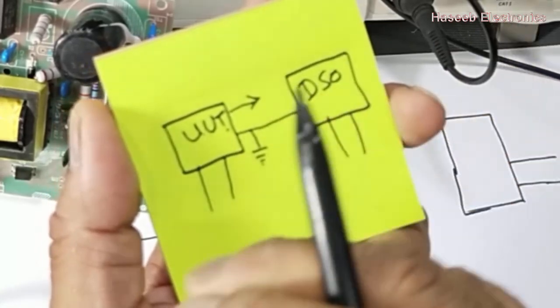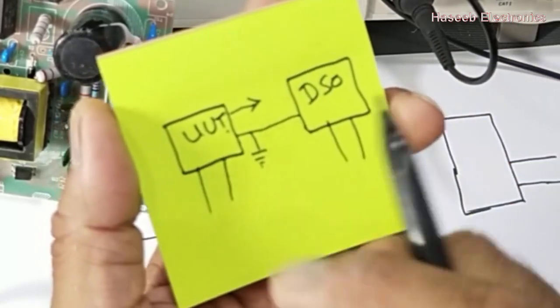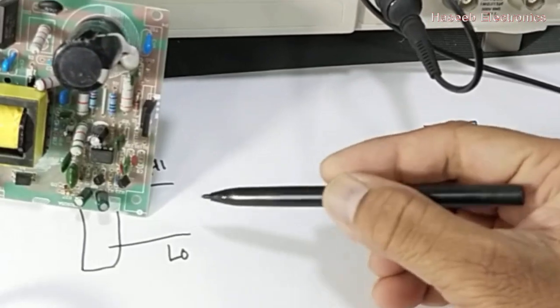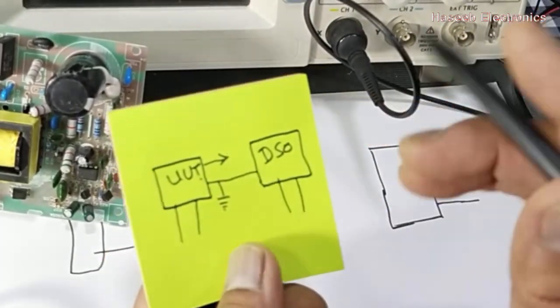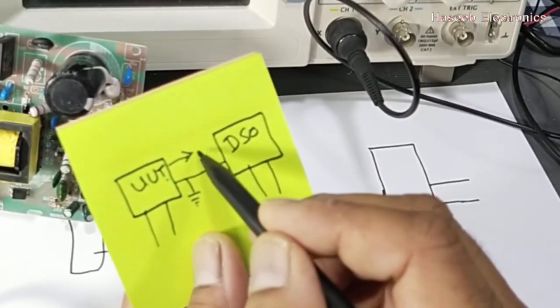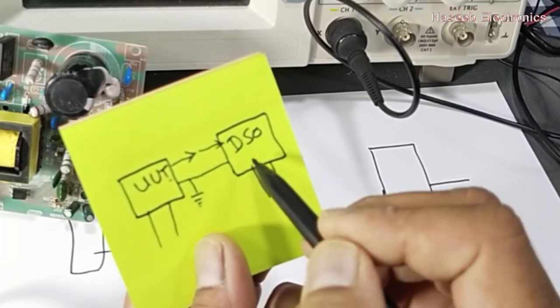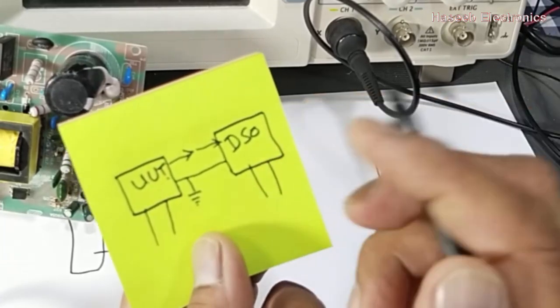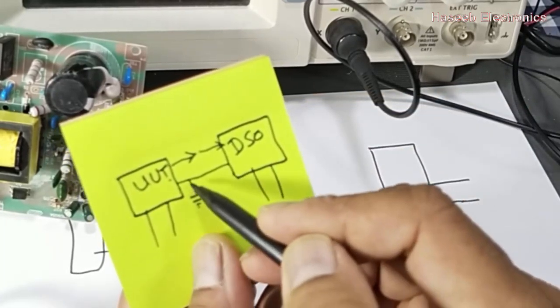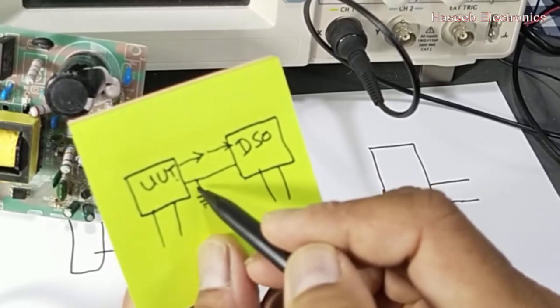The DSO has a ground path, so all the time we have to connect the DSO return path with the signal reference, which is the return path for that circuit. The oscilloscope will compare this signal with respect to this reference point.